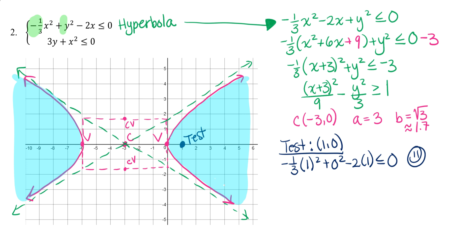Next, we move on to the second inequality. So first look at and identify which conic our second inequality is. All right, our second inequality, as you probably guessed, is a parabola.